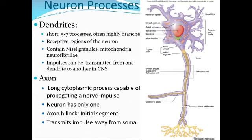Dendrites are very short, multiple, small branching processes. They contain Nissl bodies, neurofibers, and are the receptive processes of the neuron, receiving signals from other neurons via synapses with axon terminals. They contain Nissl granules, mitochondria, and neurofibrils. Impulses can be transmitted from one dendrite to another in the central nervous system.